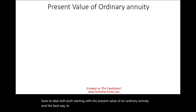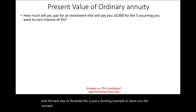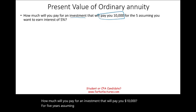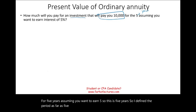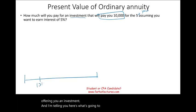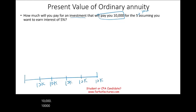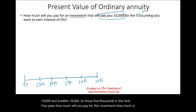The best way to illustrate this is to work an example. How much will you pay for an investment that will pay you $10,000 for five years, assuming you want to earn 5% interest? So the period is five years. I'm offering you an investment where I'm going to pay you $10,000, $10,000, $10,000, $10,000, and another $10,000 over the next five years. How much will you pay? How much is this investment worth?